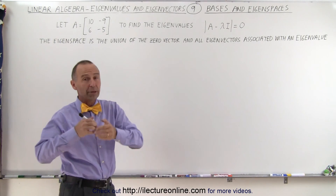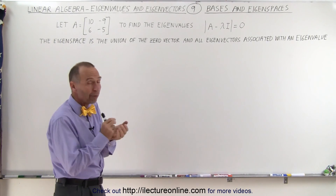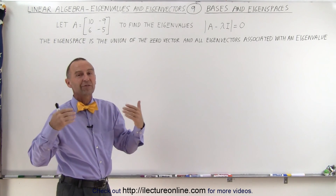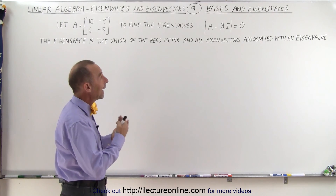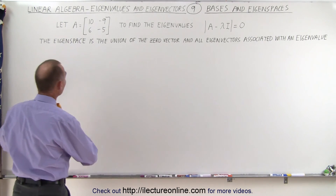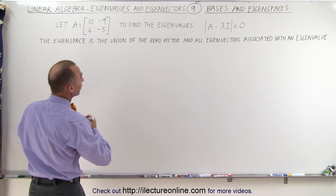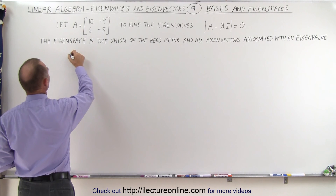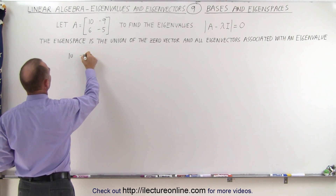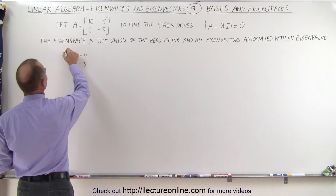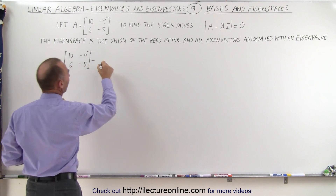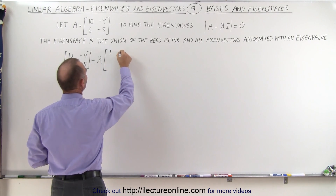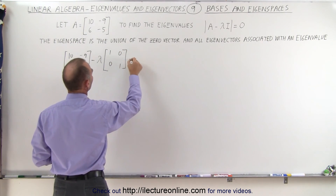So we're going to find the eigenvalues, we'll pick one of those eigenvalues, then we'll find the eigenvector associated with that eigenvalue, and then we can define the concept of a basis and an eigenspace. First, let's find the eigenvalues. It's the matrix A — that would be 10, -9, 6, -5 — and we subtract from that the unknown eigenvalues and set that equal to zero.